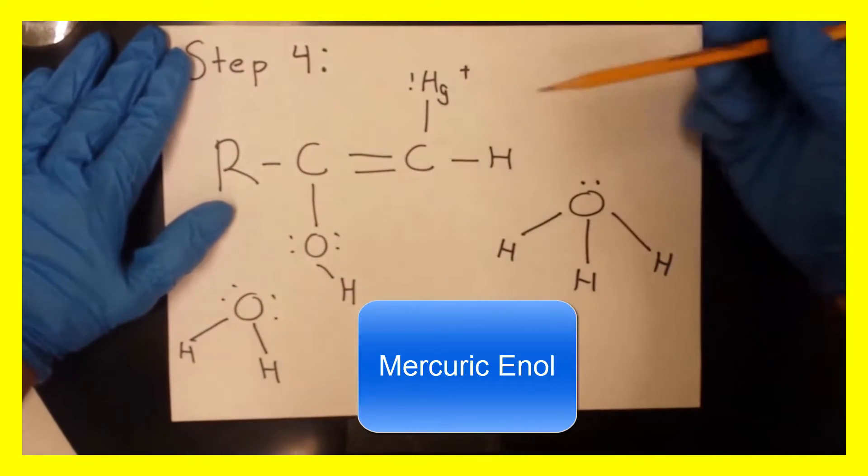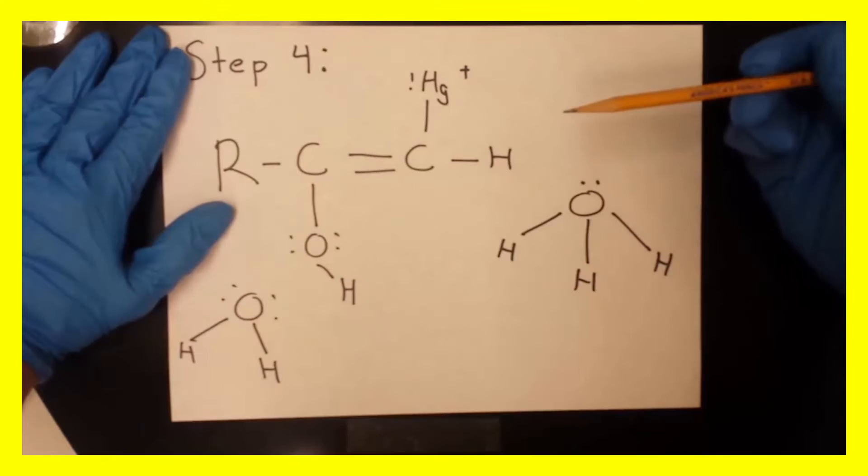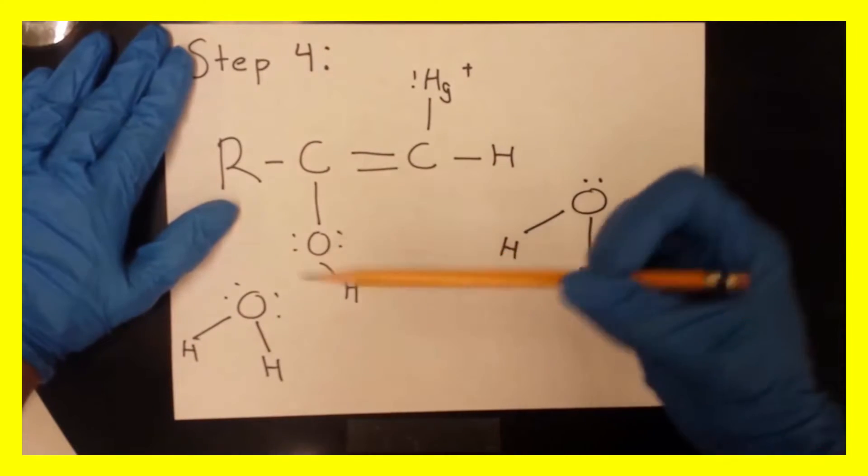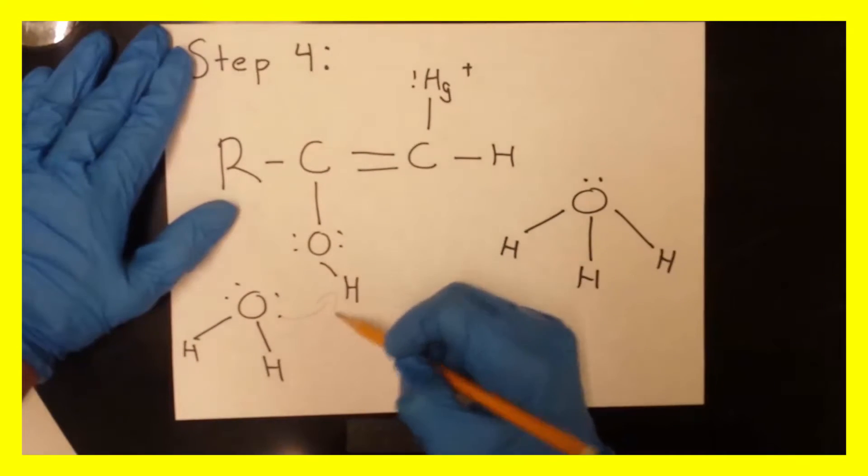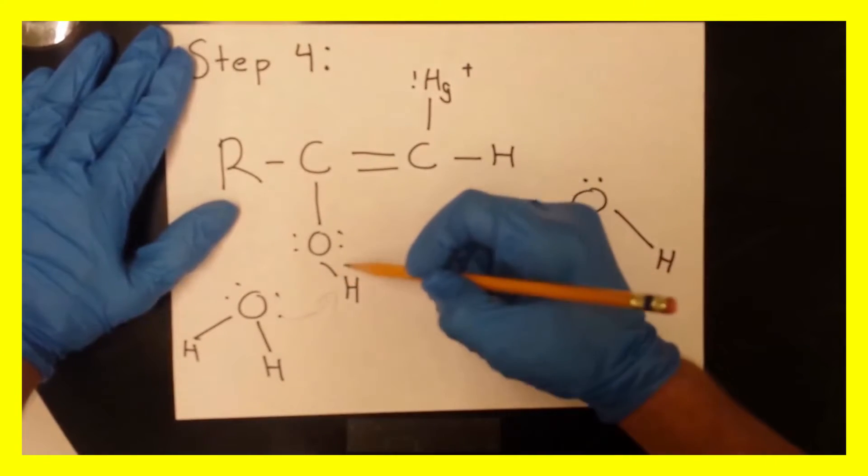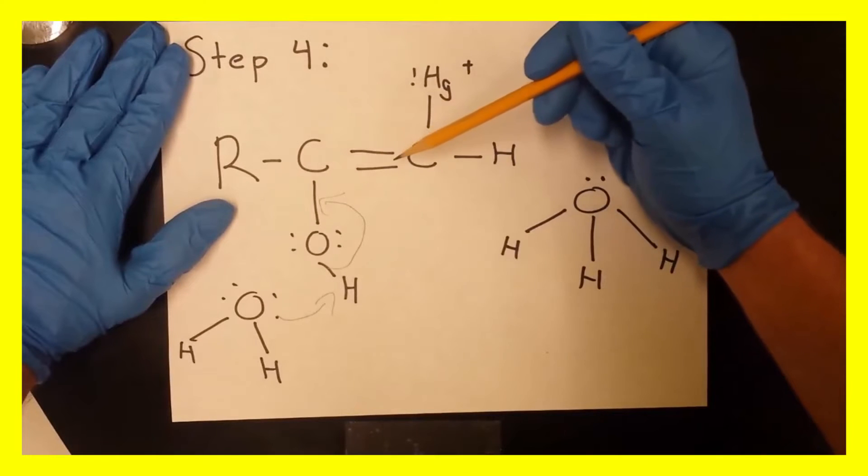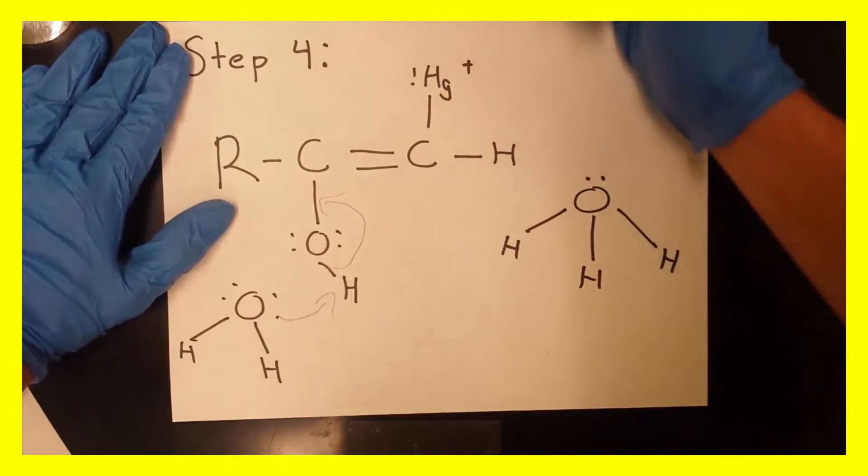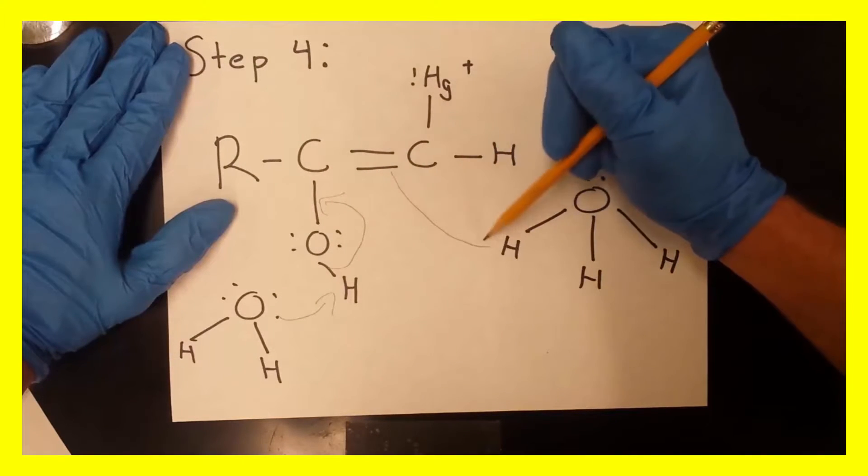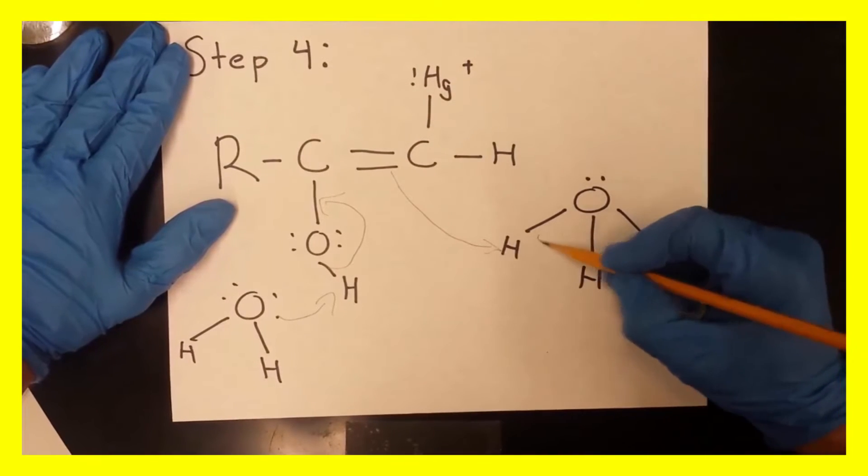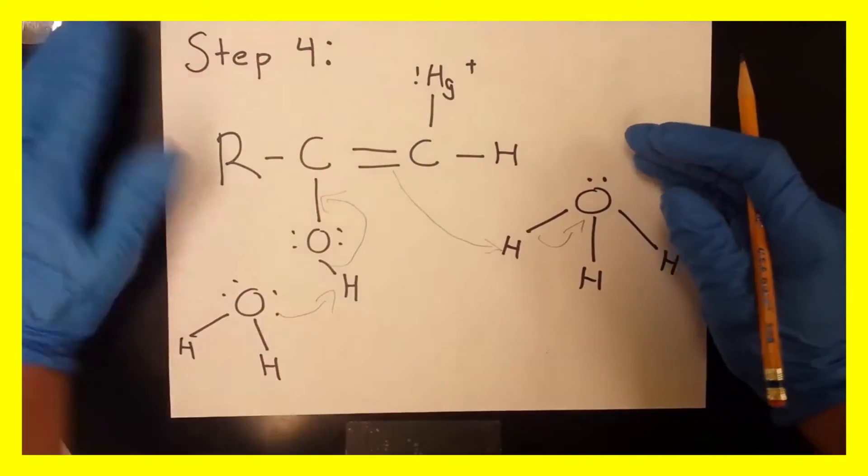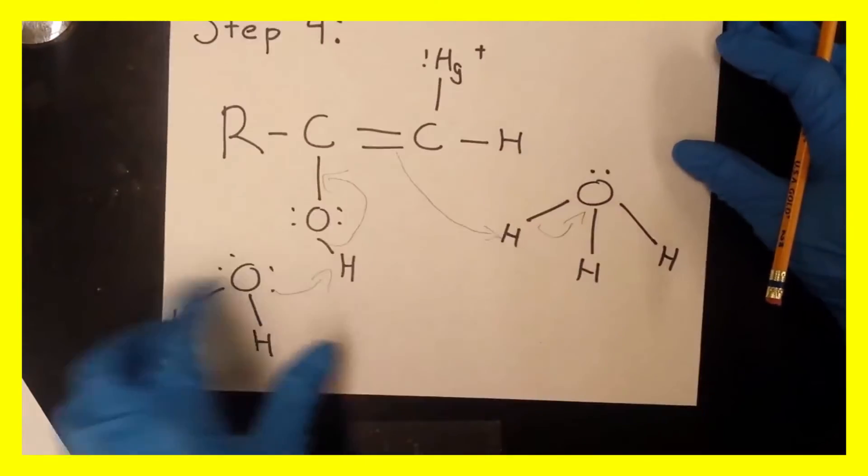And this enol then will have water attack and pull off this hydrogen, making this double bond to form. And when this double bond forms, this double bond will kick off and will attack the hydronium ion that was previously made from the last step whenever the water had taken the hydrogen off to form this alcohol group.